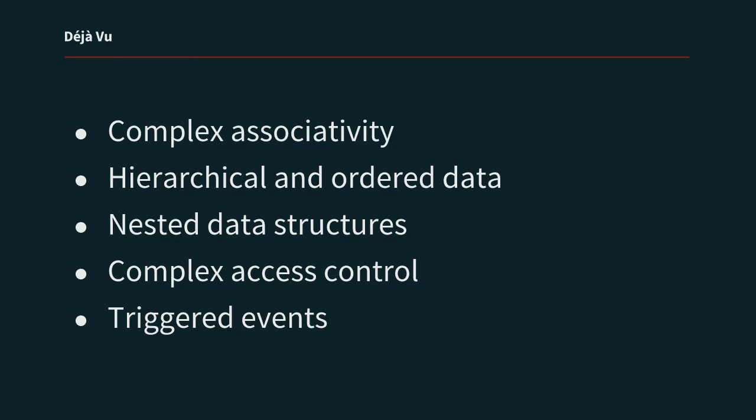Some examples of those problem types are complex associativity — a user has a ticket for a flight, and those three entities are related. We also have hierarchical and ordered data: this classroom belongs to this school within this school district. Or nested data structures: an office is located at this address, or this article has a pull quote. Or complex access control: this user should be able to see this entity if it has this field value. And triggered events on entity CRUD: when this node is saved, send an email. We solve these same problems over and over, but we don't have generic solutions to them.